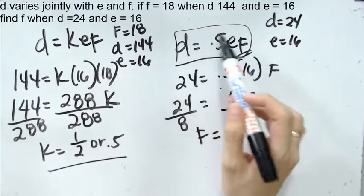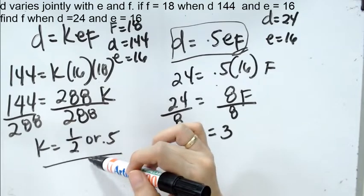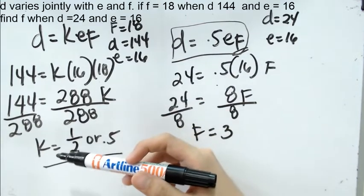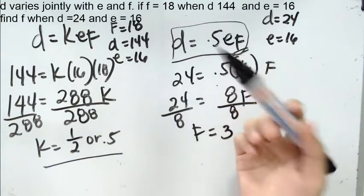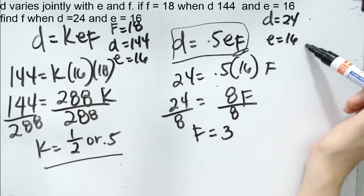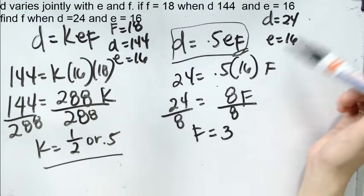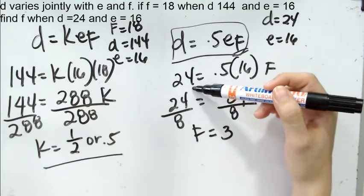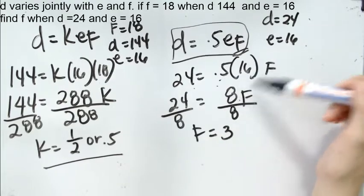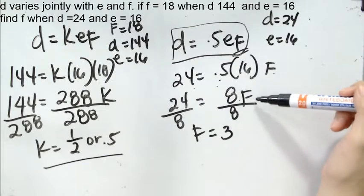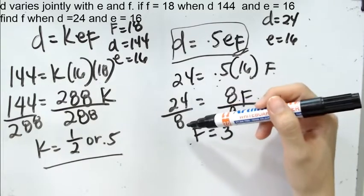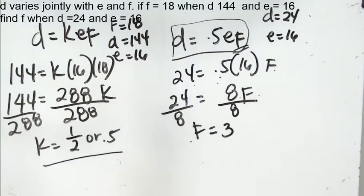After finding the value of K, we proceed with the third statement or with what is being asked. Find F when D is 24 and E is 16. We rewrite the given equation, but this time around we change K into 0.5. We substitute D equals 24 and E is 16. We solve: 0.5 times 16 gives us 8, multiplied by F. We divide both sides by 8 to isolate F. And 24 divided by 8 equals 3.